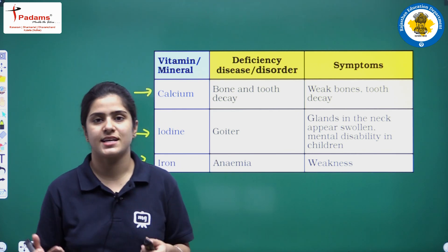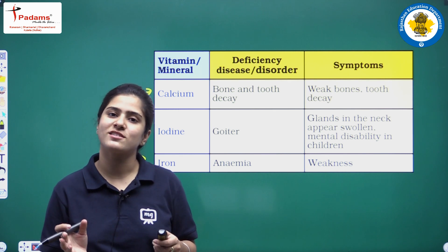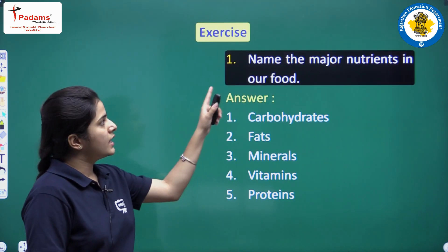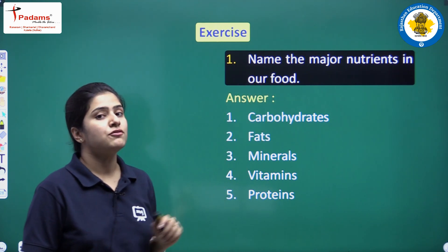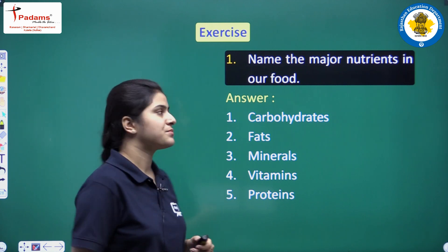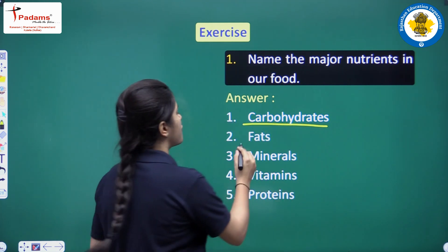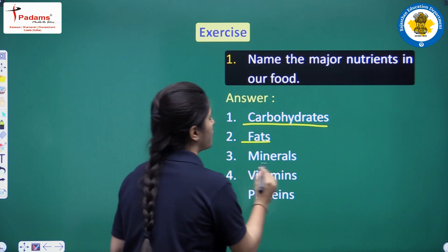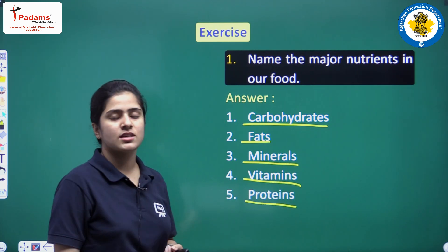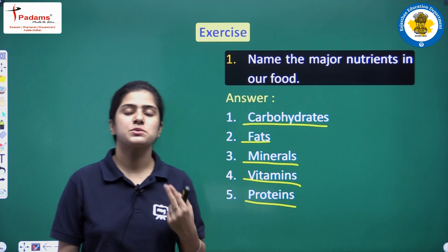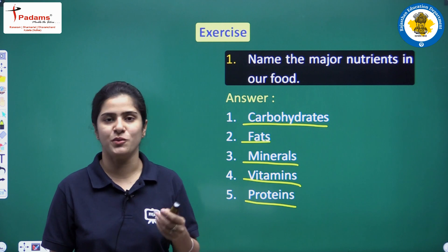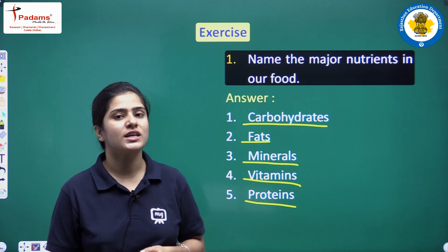Now we will do the exercise portion since we have completed the chapter. The first question asks: name the major nutrients in our food. The answer is carbohydrates, fats, vitamins, minerals, and proteins. These are the major nutrients in our food.